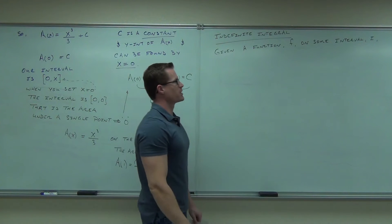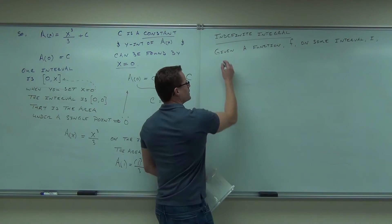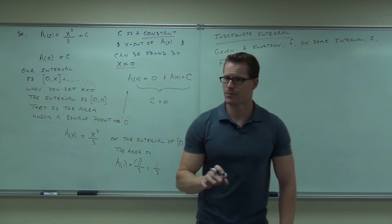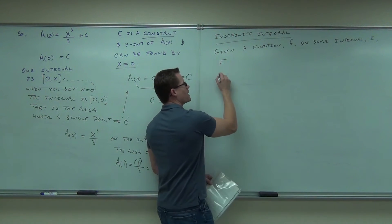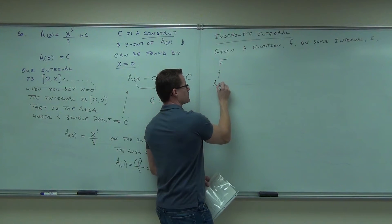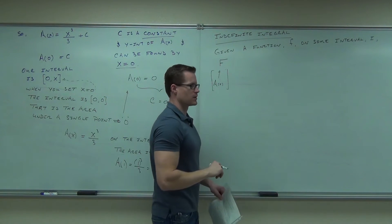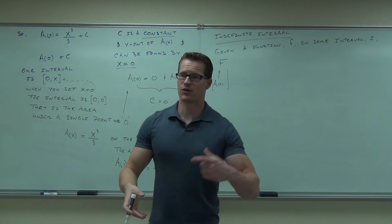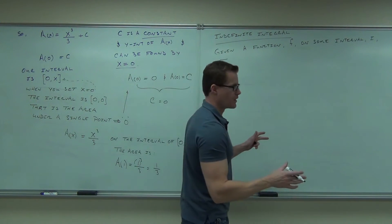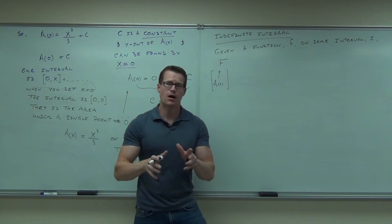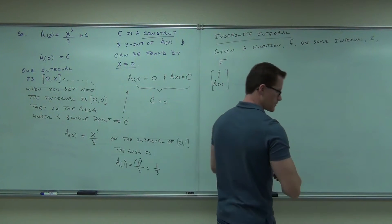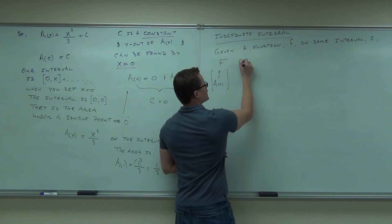Given a function f on some interval i, capital F is called the anti-derivative. Please make a note here — this is also the area function. In general we call the anti-derivative just the capital letter of whatever the function is. So if we have a function f, the anti-derivative is capital F. It will stand ultimately for the area function of your curve.